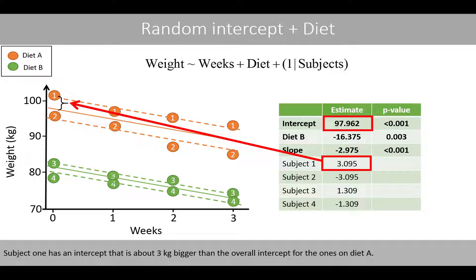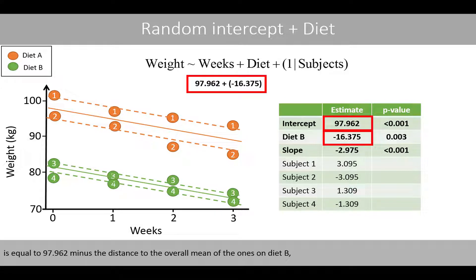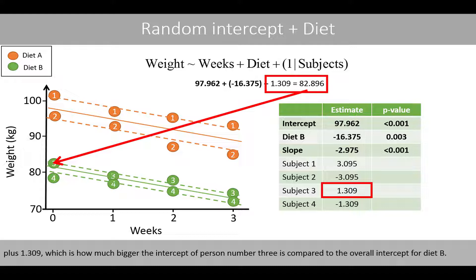Subject number 1 has an intercept that is about 3 kilos bigger than the overall intercept for the ones on diet A. For example, we estimate the intercept of subject number 3 is equal to 97.962, minus the distance to the overall mean of the ones on diet B, plus 1.309, which is how much bigger the intercept of person number 3 is compared to the overall intercept for diet B.